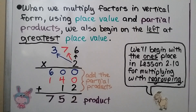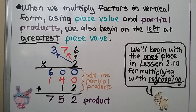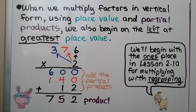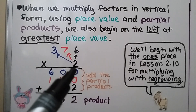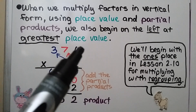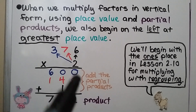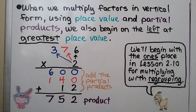When we multiply factors in vertical form using place value and partial products, we also begin on the left at the greatest place value. We do 2 times 300, which is 600. Then 2 times 70 is 140, and 2 times 6 is 12. We add these partial products to get 752. We'll begin with the ones place in lesson 2.10 for multiplying with regrouping — this is a completely different lesson showing how you can use place value and partial products to do mental math.